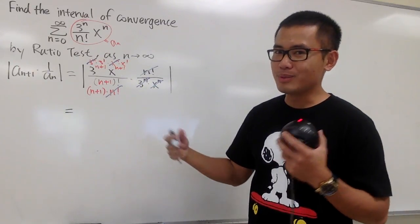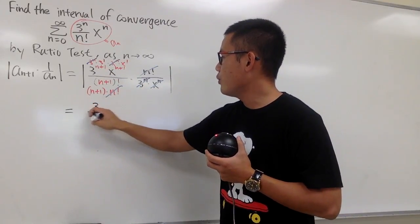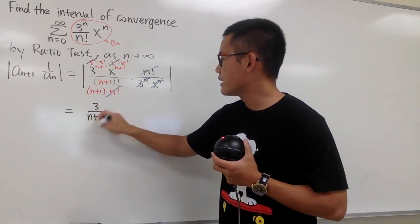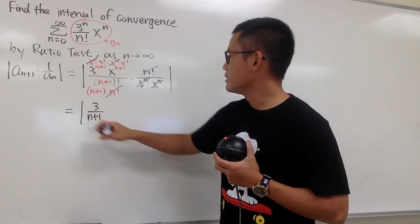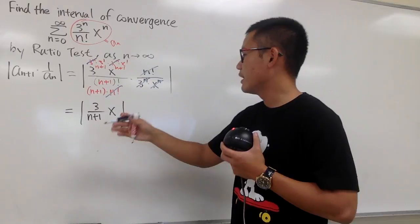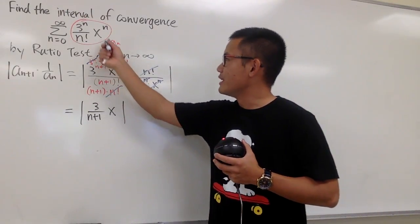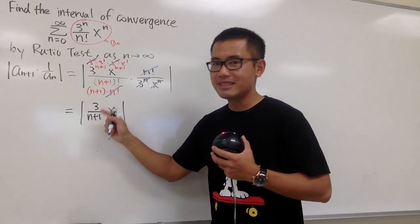And we're still putting the equal sign because we're just doing algebra. Okay, on the top here, we have 3 over (n+1), and this is still in the absolute value, and we have this x. So let's just put the x on the side, and that's what we have. And now, what's next? We have to take the limit as n goes to infinity, and it's just this part.